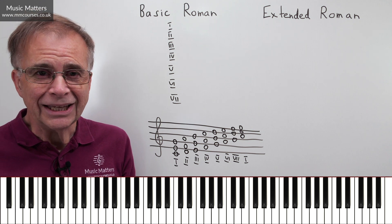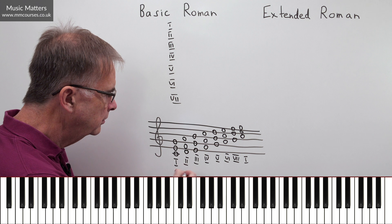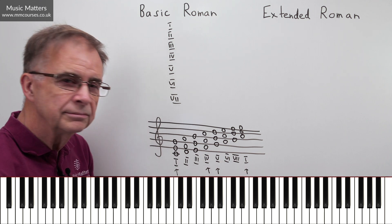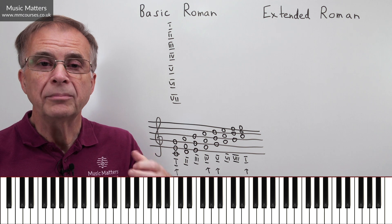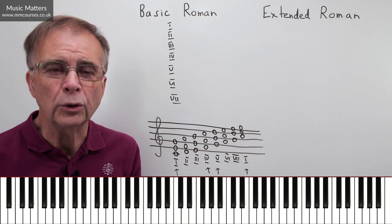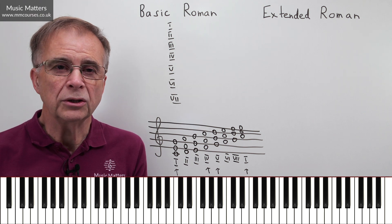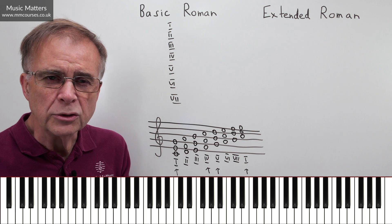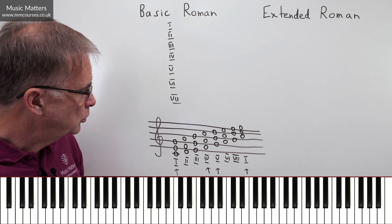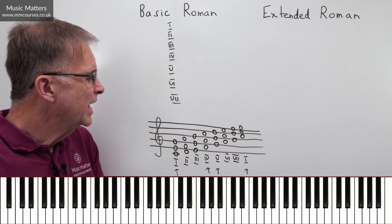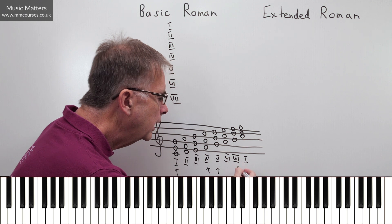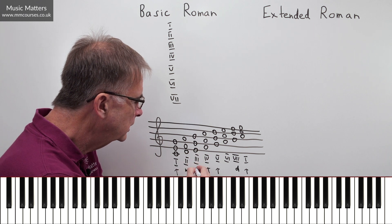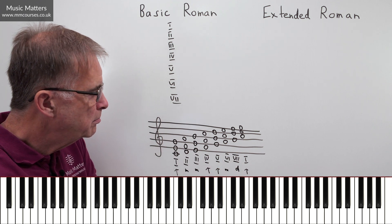So if you're in a major key, chords I, IV, and V are your major chords — we call them the primary chords. They're the most likely chords to be used, the most important chords in the hierarchy of a major key. So it's quite useful to know that if you're not sure what's major or minor. Now, your chord VII in a major key is a diminished chord, and the others — II, III, and VI — are your minor chords.